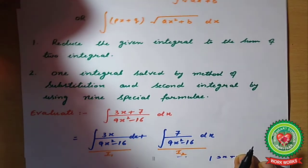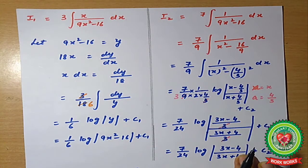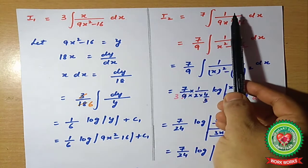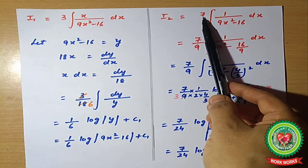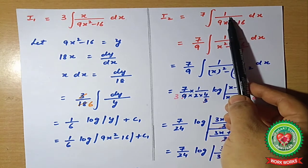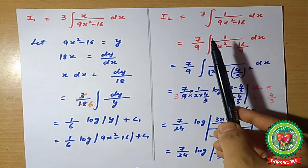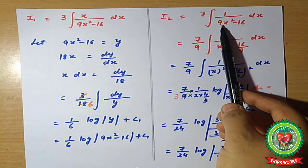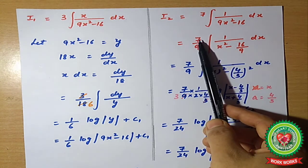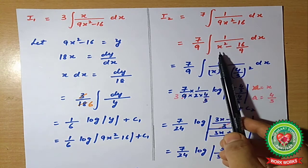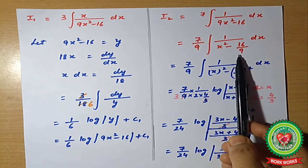We now have two integrals. According to the formula, the numerator should be 1. In I2, if we take 7 as common, we can apply the formula. For the formula, the coefficient of x² should be 1, so we take 9 as common: I2 = (7/9) ∫ 1/(x² − 16/9) dx.